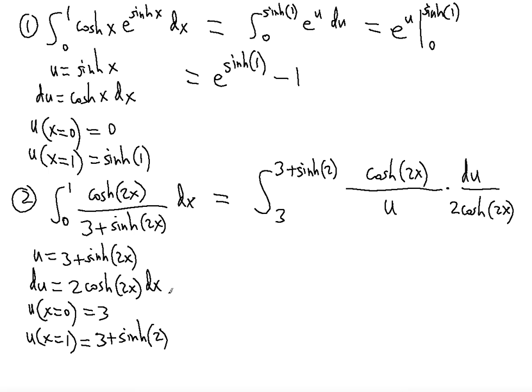Now notice that the cosh 2x cancels out, which is what we need, and we only have one half left that we can put outside the integral. So we get 3 plus sinh 2 and we get 1 over u du.